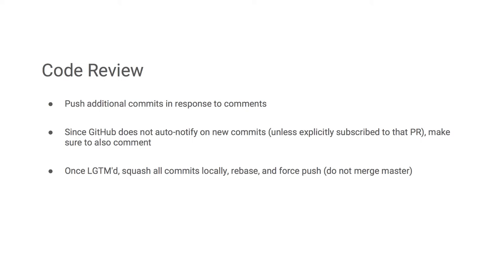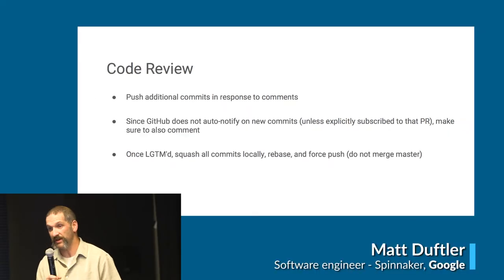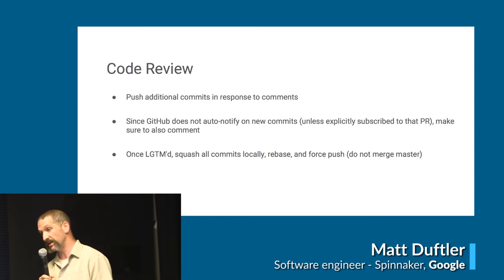You're going to get some comments on the pull request - just push additional commits. There's been some back and forth on this, but I mostly prefer adding additional commits so you can see the changes were in response to comments. Once it's approved and you're ready to merge, you can squash and rebase it, then force push the whole thing. Don't merge master - if you do, somebody will just ask you not to.